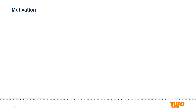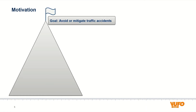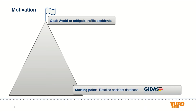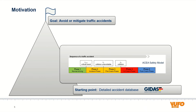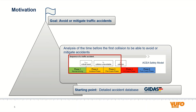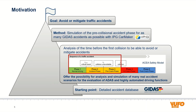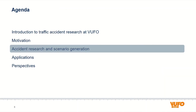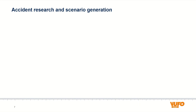Our overall goal and motivation is of course to avoid or at least mitigate as many traffic accidents as possible, and we asked ourselves how we could contribute to this through our research. As a starting point we have a large database named GEDAS containing detailed information on over 38,000 traffic accidents. In order to avoid or mitigate accidents, the time before collision has to be analyzed, and we would like to provide the possibility to analyze many real accident scenarios for the evaluation of ADAS and highly automated driving functions by simulation. Therefore we extracted all relevant pre-collisionary information, processed and enhanced it, and turned it into pre-collisional simulations with IPG CarMaker, including all accident participants.